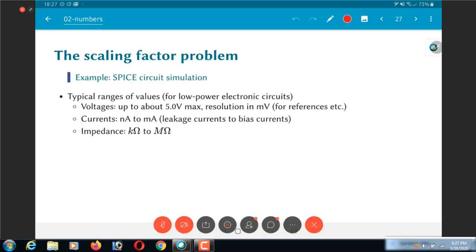Currents, normally bias currents would be in the range of milliamps or tens to hundreds of microamps. Leakage currents could be in the range of nanoamps. And the impedances themselves would typically be in the range of kilo-ohms to mega-ohms. These are just typical numbers that you are likely to find in a spice simulation for some circuit that you have designed.